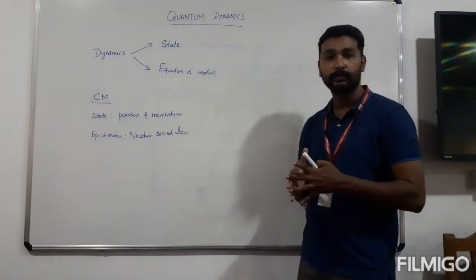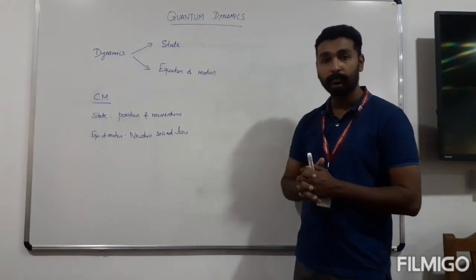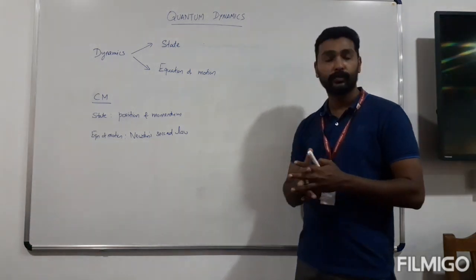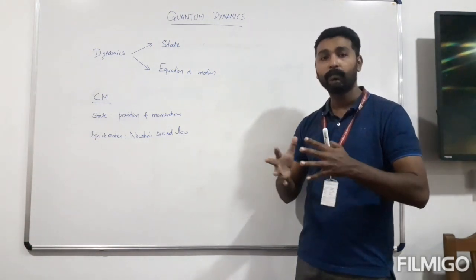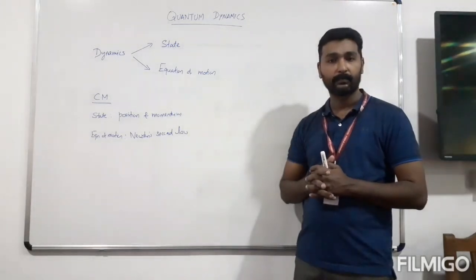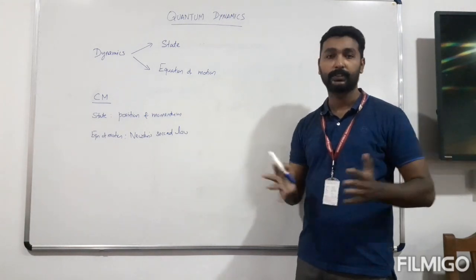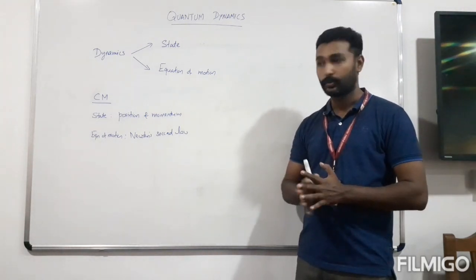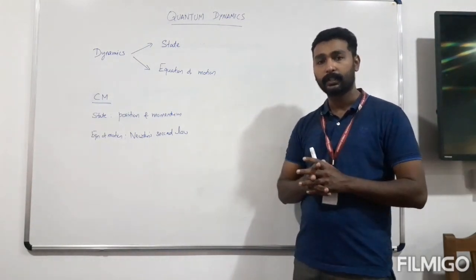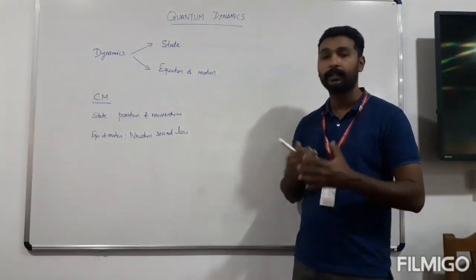So why is this dynamics important? The dynamics gives the time evolution of the system. Once you know the state of the system — the initial state — and the equation of motion, by solving the equation of motion you can know the entire details of the system: the past and the future. So we get complete information of the system if we know the state and the equation of motion.